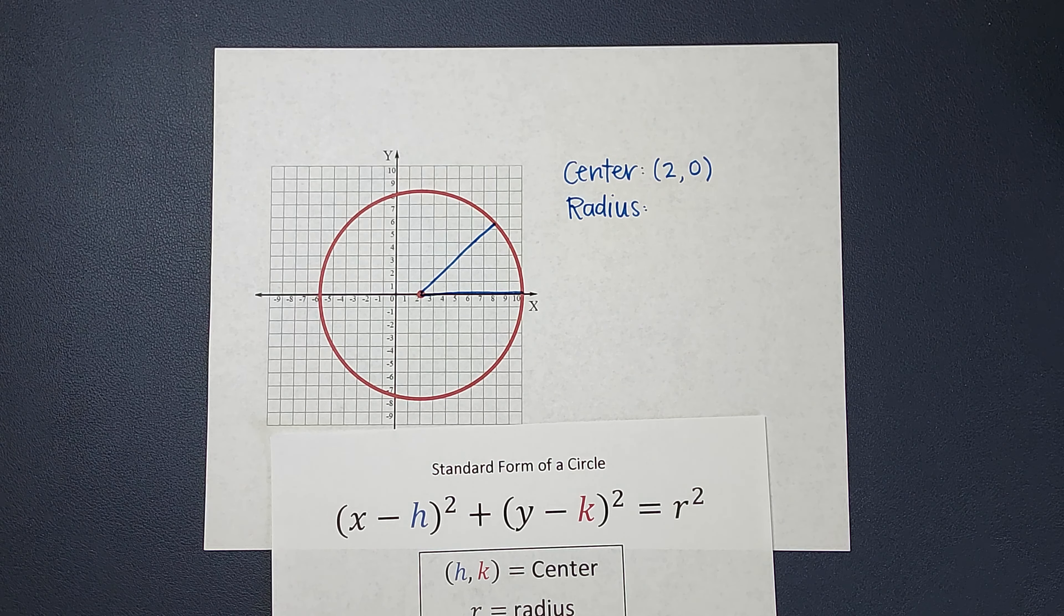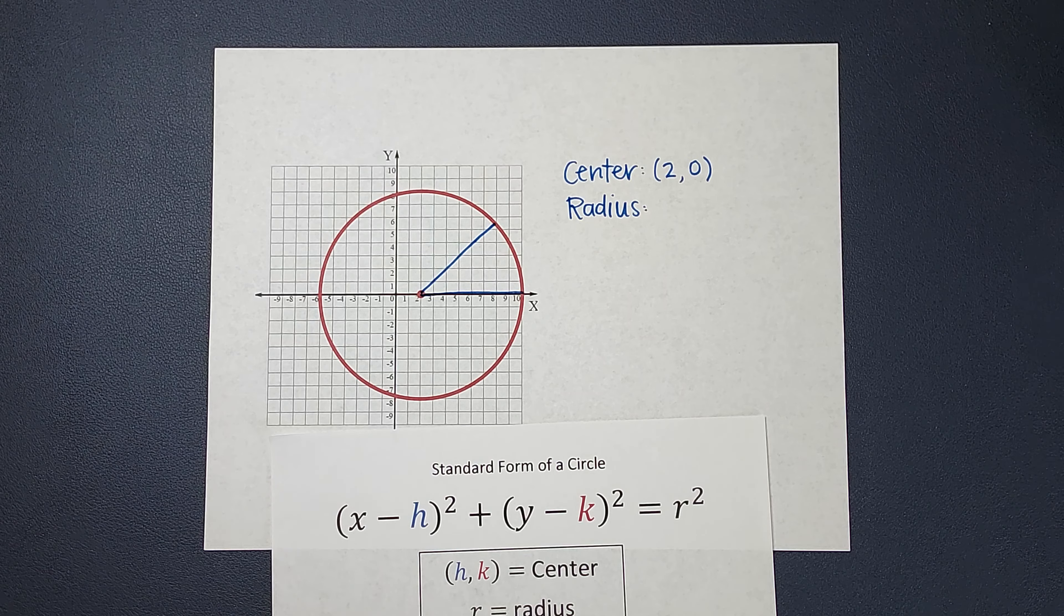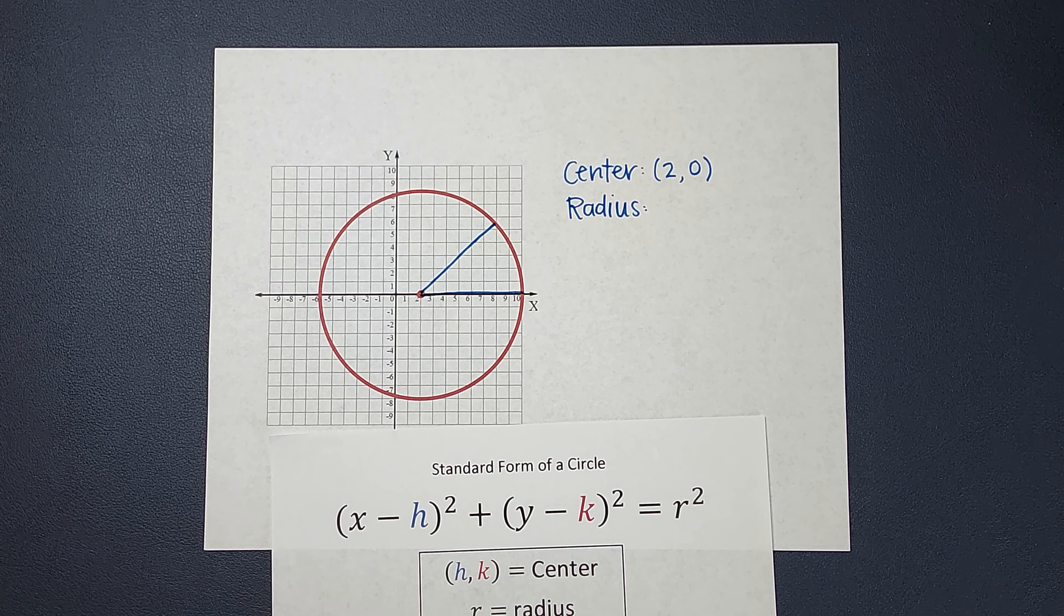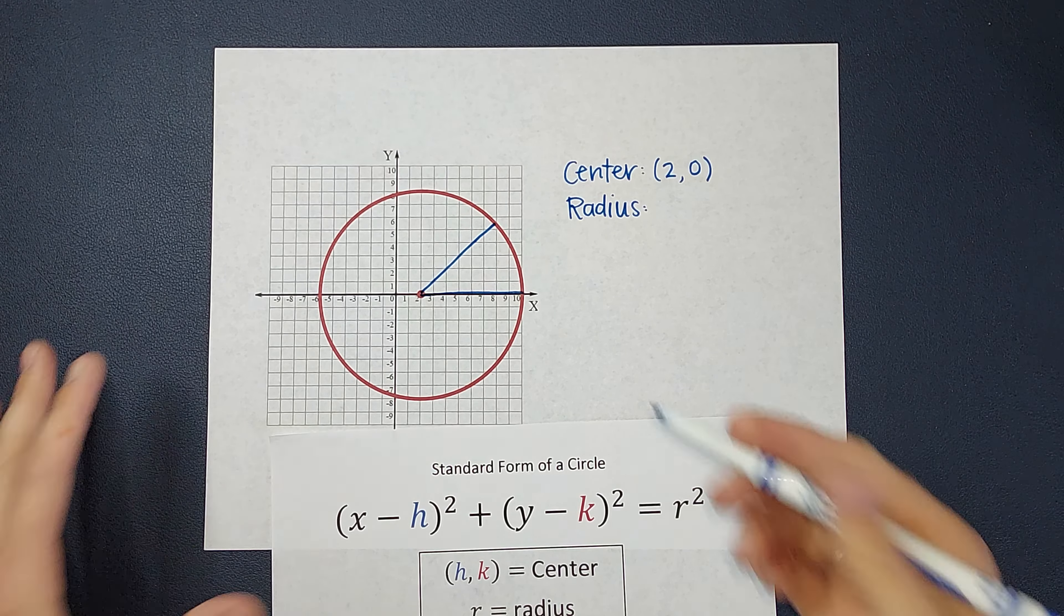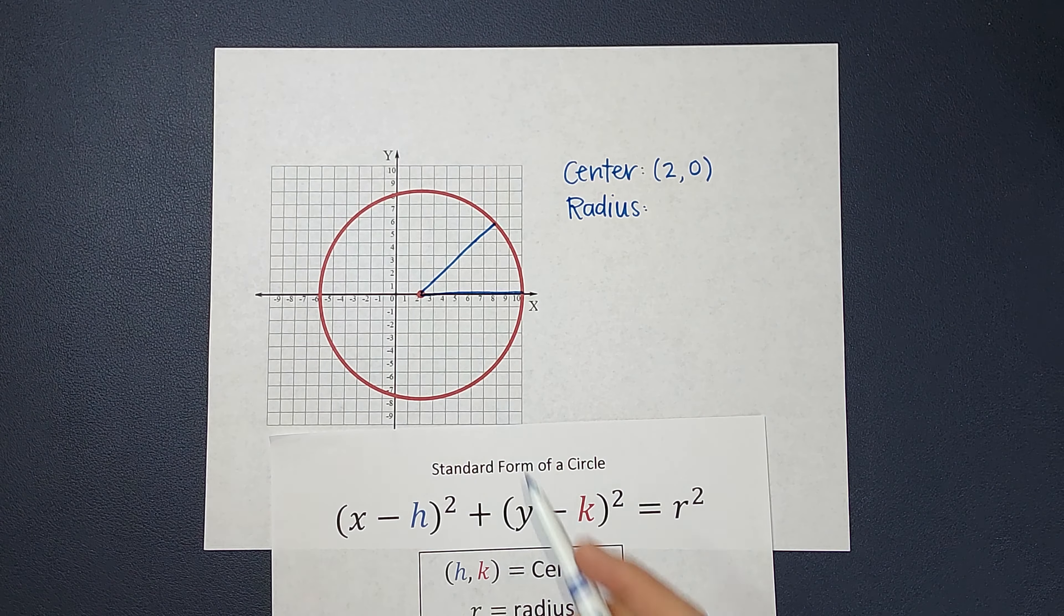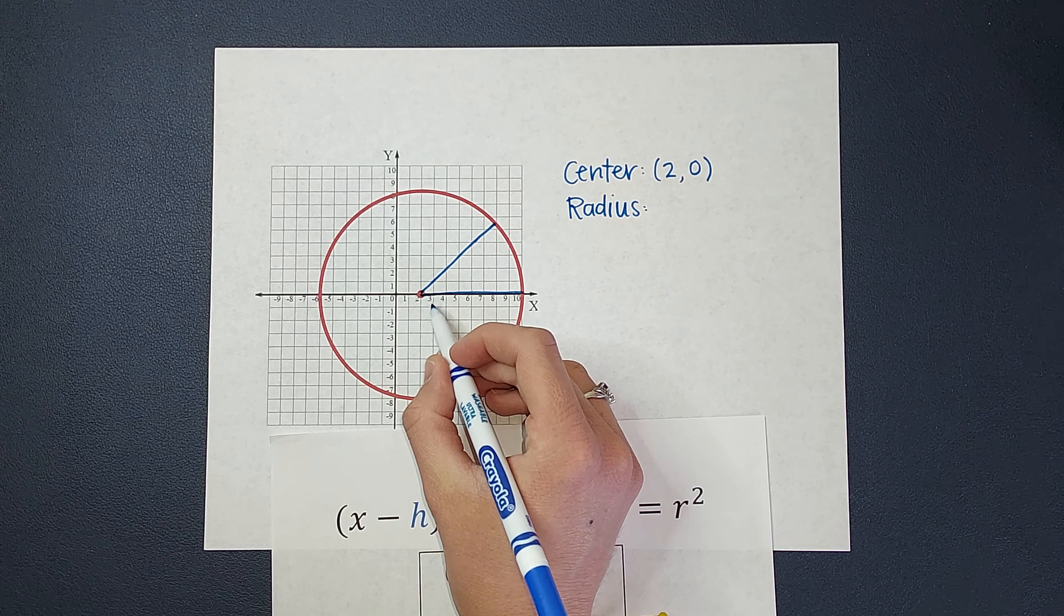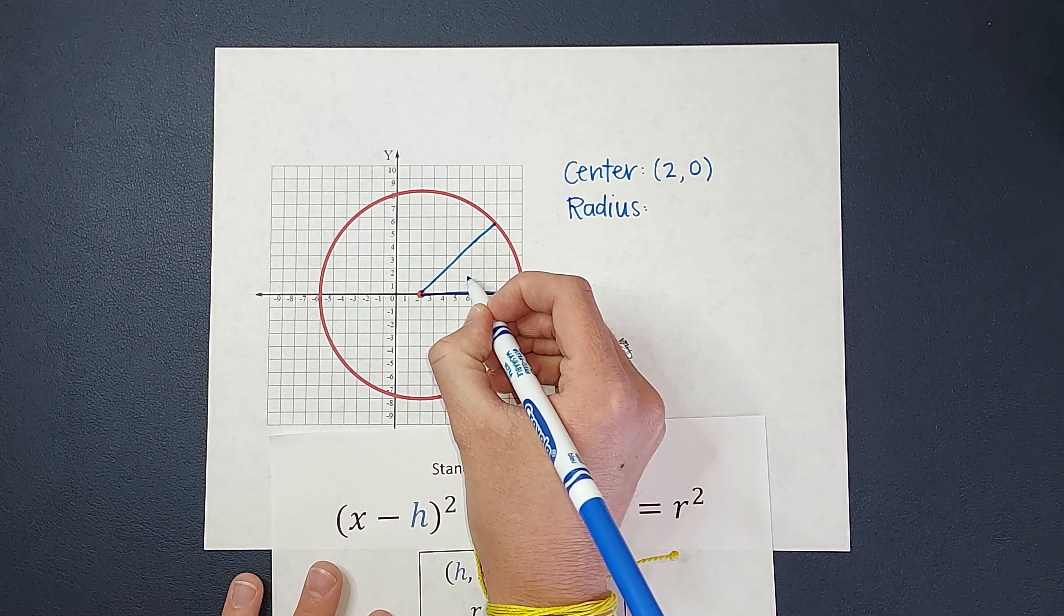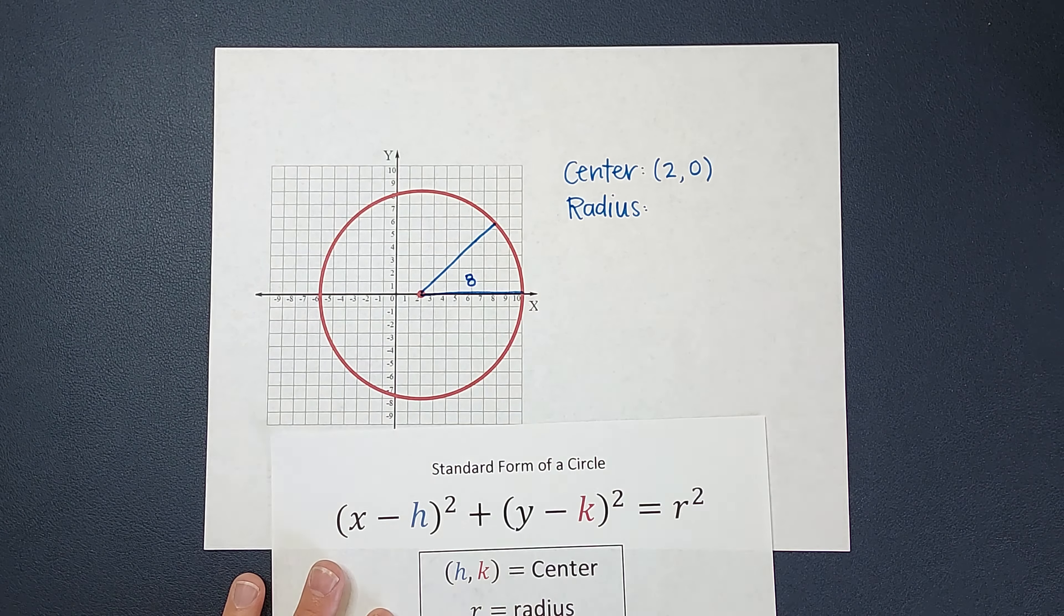Now there might be some examples where you're given different points and you may need to use the distance formula, the midpoint formula, but for this example we can just count it because it goes through this point nice and clean. So I can literally just count 1, 2, 3, 4, 5, 6, 7, 8. So my radius is 8.